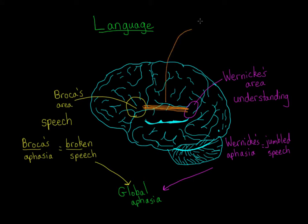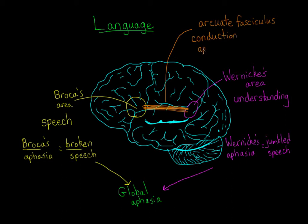Broca's area and Wernicke's area are connected in the brain by a bundle of nerve fibers called the arcuate fasciculus. One cool thing is that this loop is also found in deaf people who know sign language, so it's not specific to spoken language — the brain adapts to use whatever modality is necessary for communication. When this connection is damaged, people experience conduction aphasia, where their ability to conduct information between listening and speaking is disrupted, making them unable to repeat things even though they understand what's being said.